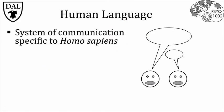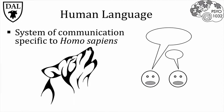Human language is a system of communication specific to Homo sapiens. Most animals communicate, but they are only able to convey immediate concerns and concrete states, like being angry, threatened, hungry, hurt, or eager to reproduce. So what makes our system of communication different than other animals?